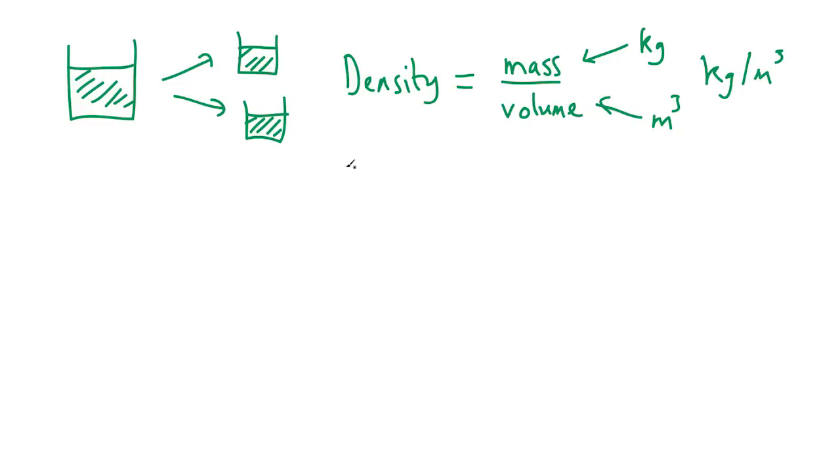Now, another common unit for density, used a lot particularly by chemists, is grams per cubic centimeter. So how do we convert kilograms per cubic meter into grams per cubic centimeter? Well, if we start with kilogram per cubic meter here, a kilogram is equal to a thousand grams. And a cubic meter is equal to, well, if I draw the cube here. So here's my cubic meter.